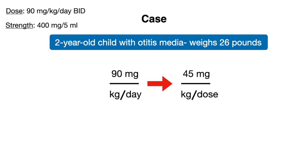Here's a quicker way to calculate this if you're interested. Initially we multiplied by 90 mg/kg/day, but since we need twice-a-day dosing, you can change the fraction to 45 mg/kg/dose — per dose, not per day. This makes it a little easier and saves a few seconds because you don't have to divide by two like we did earlier.